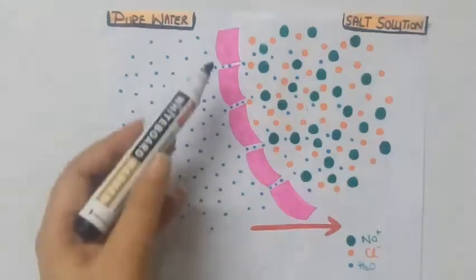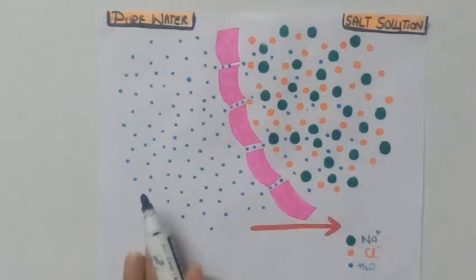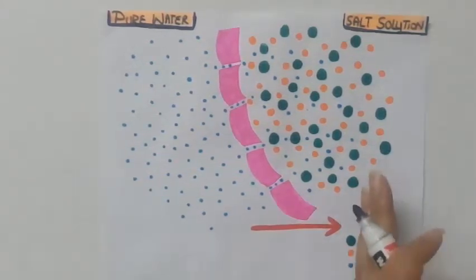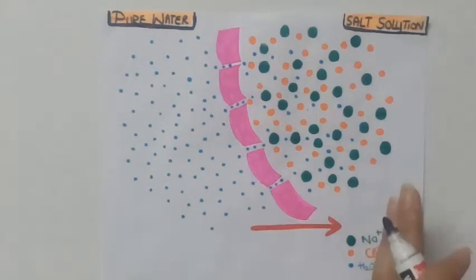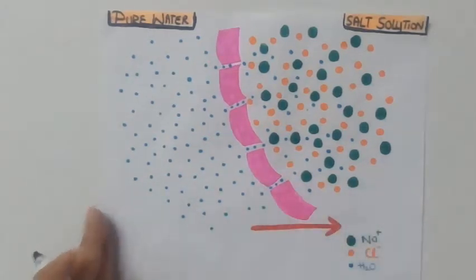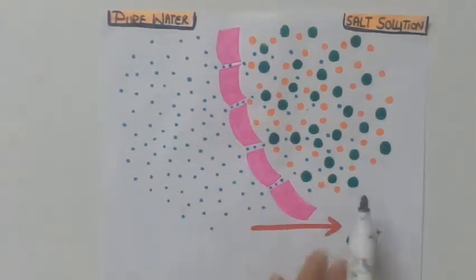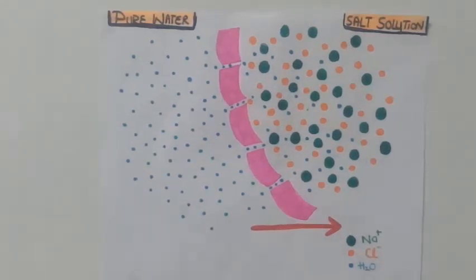Osmosis is also the movement of water molecules from high osmotic potential to low osmotic potential. This diagram shows a semi-permeable membrane — on one side we have pure water and on the other side we have salt solution, which is salt dissolved in water. Under normal conditions, the amount of water diffusing on both sides of the membrane is balanced, so the net movement of water is zero.